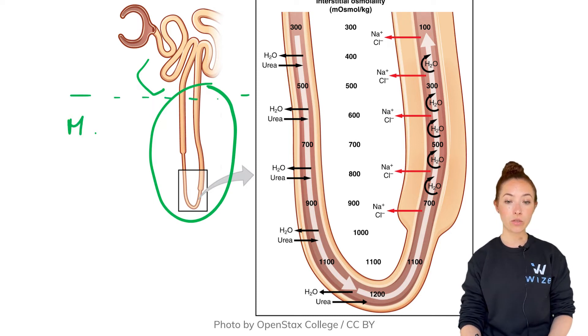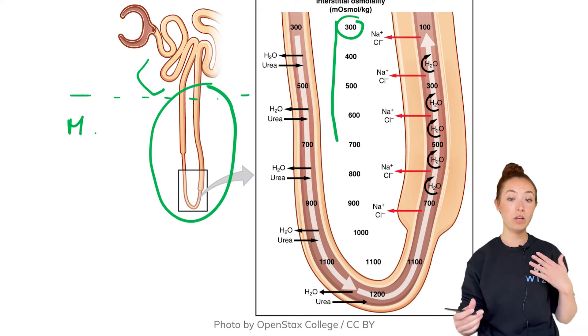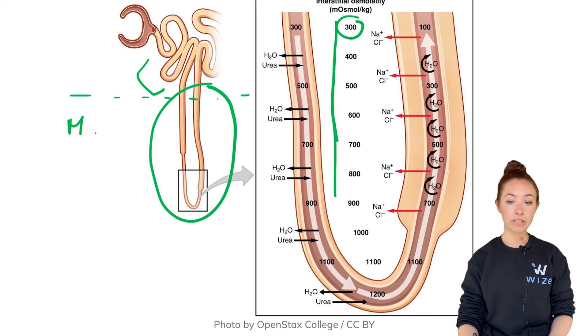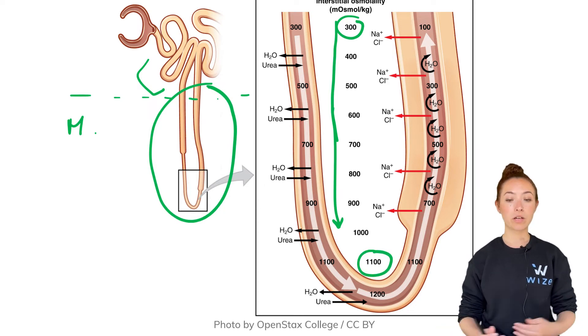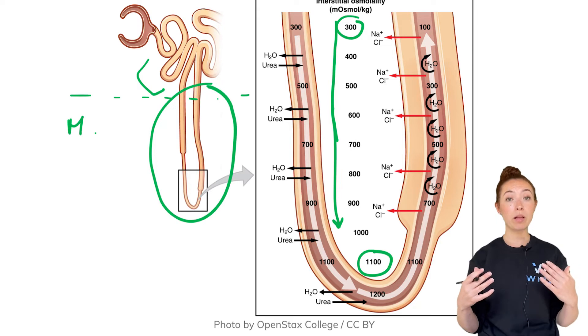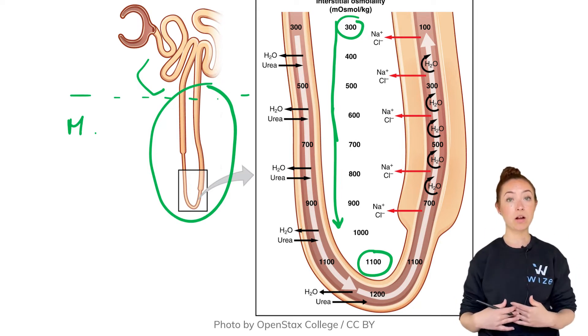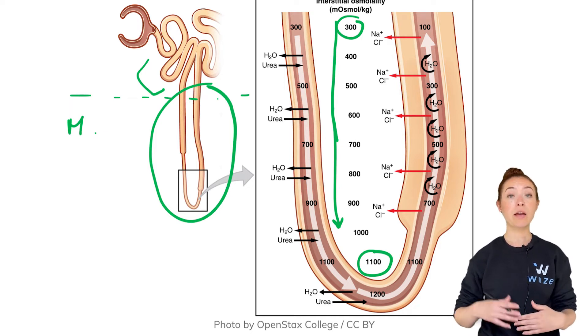At the top, the osmolarity is 300, which is pretty much the osmolarity of the filtrate and within our cells. But as we go further down into the medulla, the osmolarity jumps up to 1100 at this point. The counter current multiplier sets up this osmolarity gradient, which is really important for us to be able to concentrate urine and reabsorb as much water as possible later on.